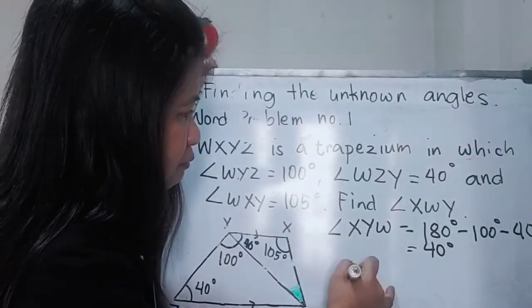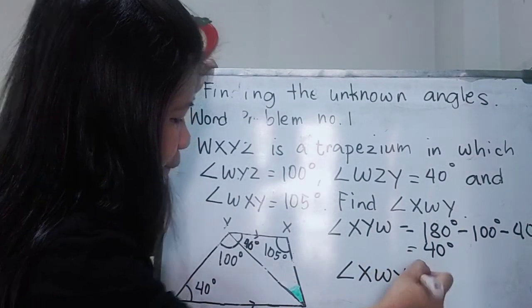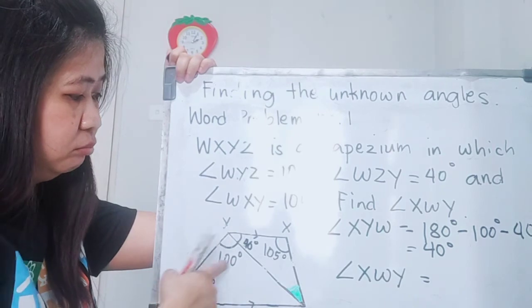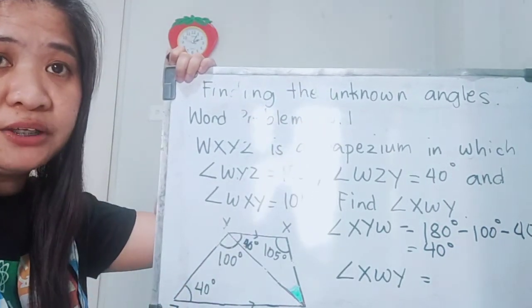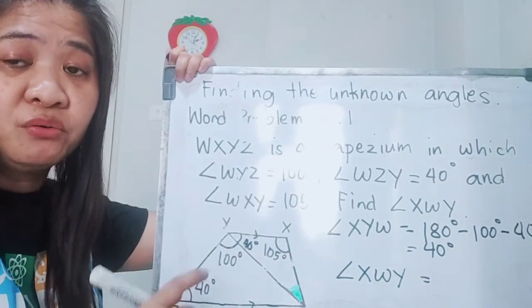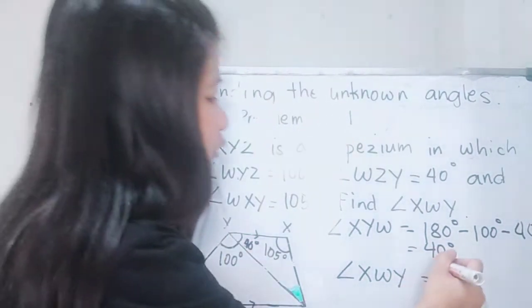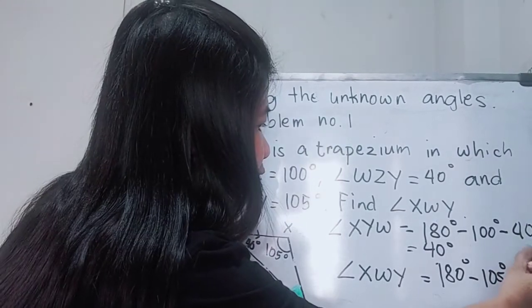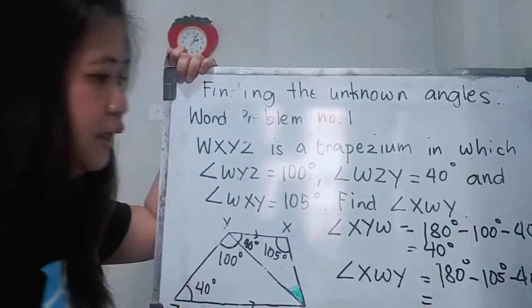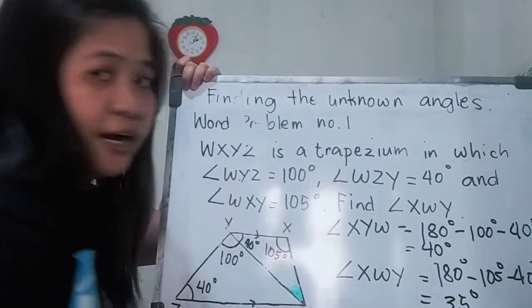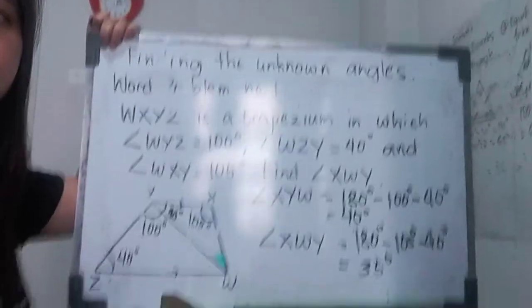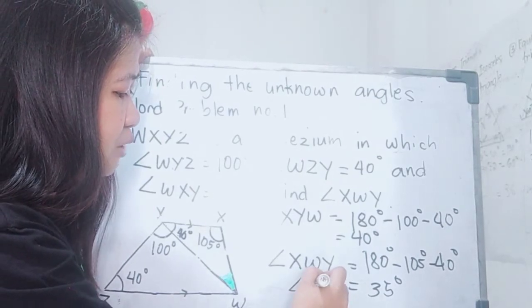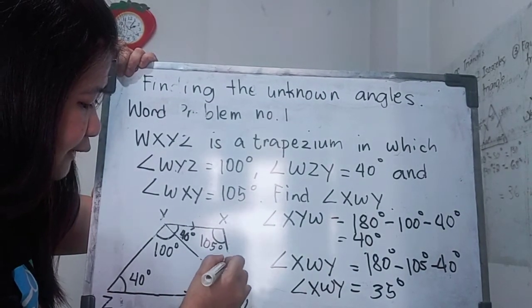You can easily find angle XWY. To find XWY, remember that the three angles of a triangle add up to 180 degrees. You have two angles here, so: 180 degrees minus 105 degrees minus 40 degrees. That gives you 35 degrees. Therefore, the answer to this problem is 35 degrees. Angle XWY is equal to 35 degrees.